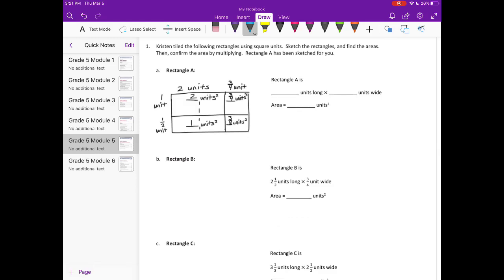Rectangle A is 2 and 3 fourths units long by 1 and 1 half units wide. They've multiplied for us: 1 times 2 is 2, 1 times 3 fourths is 3 fourths, 1 half times 2 is 1, and 3 fourths times 1 half is 3 eighths. Now we add all of those together.